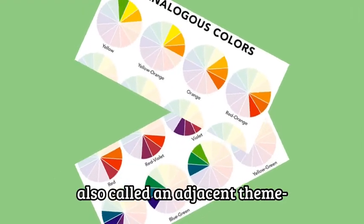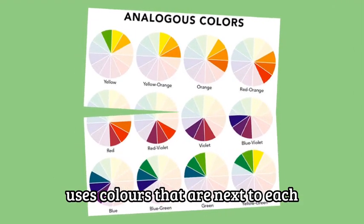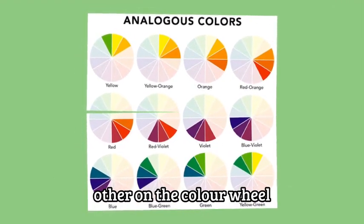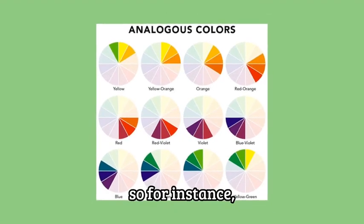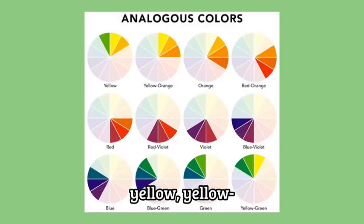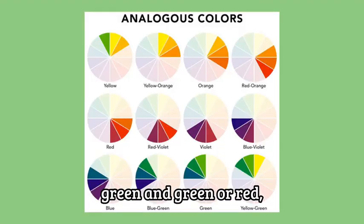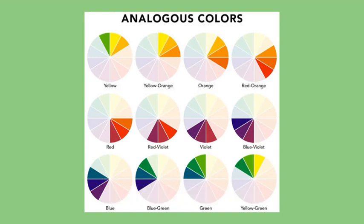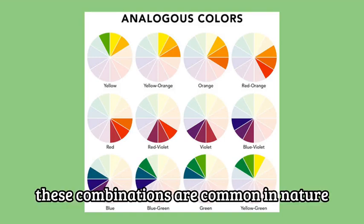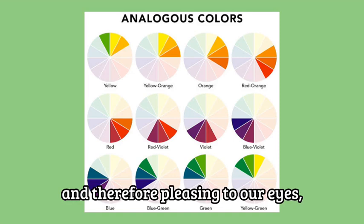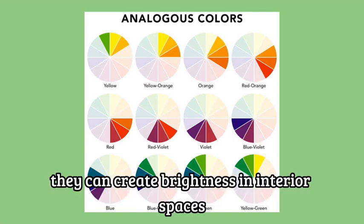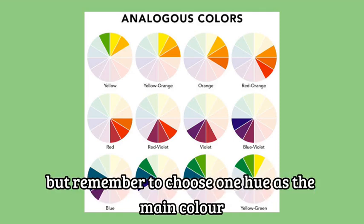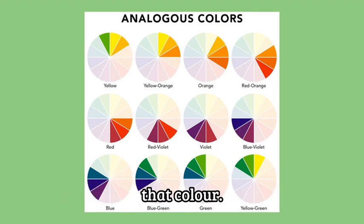The analogous theme, also called an adjacent theme, uses colors that are next to each other on the color wheel — so, for instance, yellow, yellow-green and green, or red, red-violet and violet. These combinations are common in nature and therefore pleasing to our eyes. They can create brightness in interior spaces, but remember to choose one hue as the main color and the others to be used to accent that color.